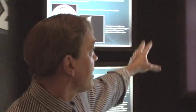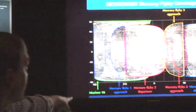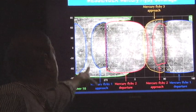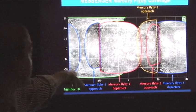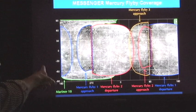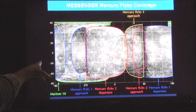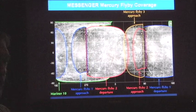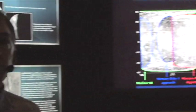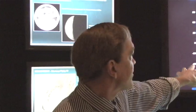If you add up the area Mariner 10 imaged, which is the part of the hemisphere outlined in green, and you look at our three flybys, we have now imaged over 90% of the surface of Mercury. You can see that there are gaps though.